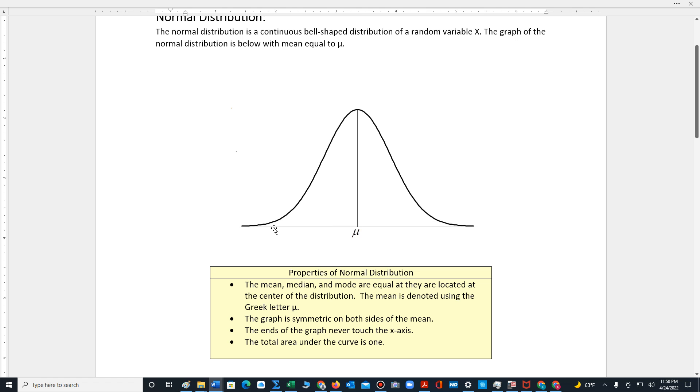Half of the data lies to the left, the other half to the right, making it the median. The value with the highest frequency is at the mean, making it the mode.